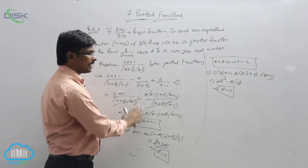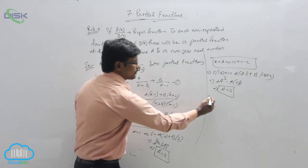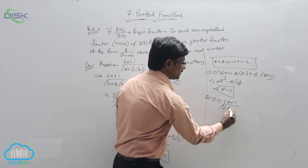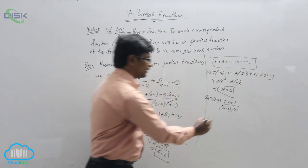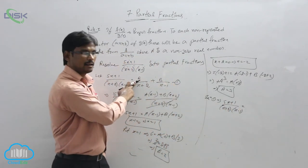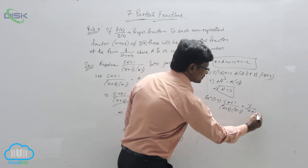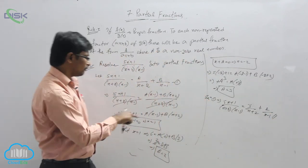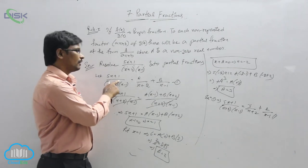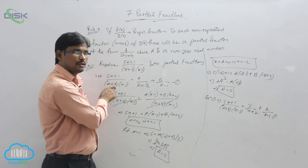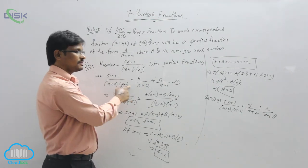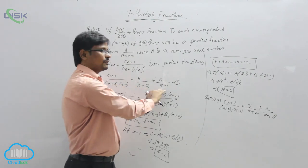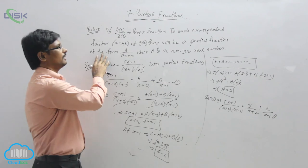So finally we have the values A = 3 and B = 2. Substituting into equation 1: (5x + 1) / [(x + 2)(x - 1)] = 3/(x + 2) + 2/(x - 1). This is the partial fraction for the case where x has power 1 and the whole factor has power 1. If there were an additional factor like (x - 3), we would add another term C/(x - 3). As the number of denominator factors increases, we add corresponding terms. This is the first rule in the partial fractions method.